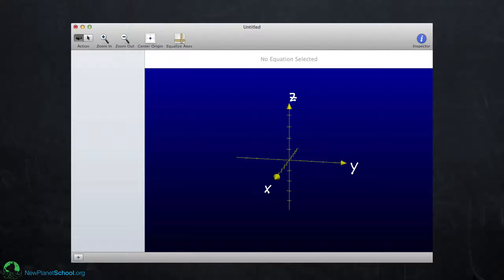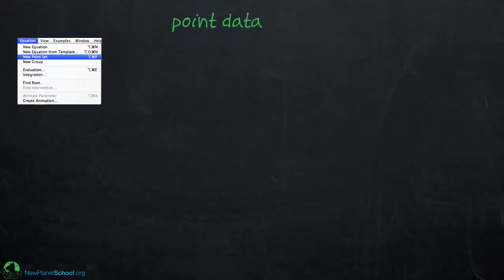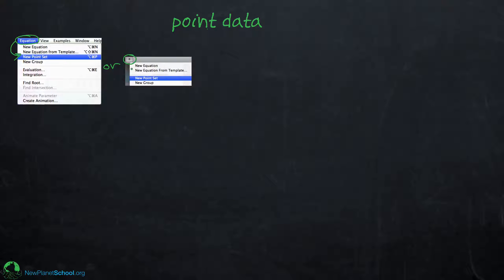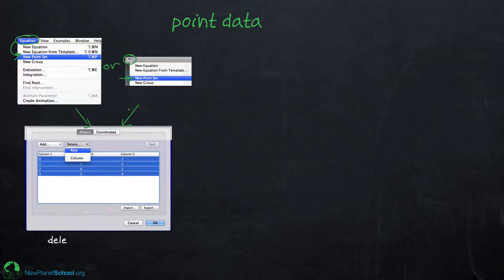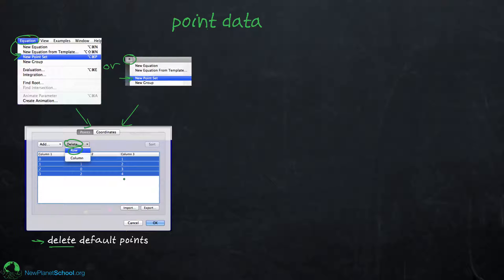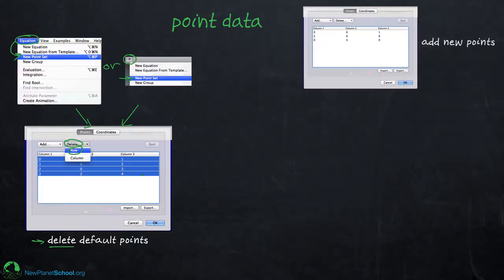Let's start off by looking at point data before we get to plotting actual functions. There are two ways to do this in Grapher: you can go under the Equation menu and select New Point Set, or you can go to the bottom left and click the plus sign and choose New Point Set Data. Either way, a box comes up with a table that has some default points already filled in. You'll want to select those and delete them so you can put in your own points.